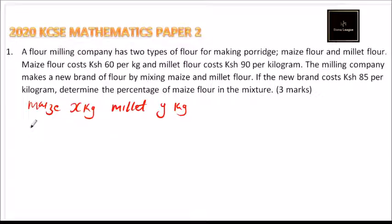This means if we take X kg and it costs 60 Kenyan shillings, then that will cost 60 times X kg.